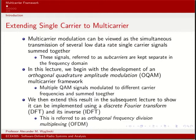We can look at multi-carrier modulation as a simultaneous transmission of several low data rate single carrier signals summed together. Multi-carrier essentially consists of a collection of narrow band sub-carriers that are all added together and transmitted at the same time at parallel frequencies. These narrow band signals, the terminology we're going to call them are sub-carriers, and they are separate in the frequency domain, although they might be transmitted at the same time in the time domain.